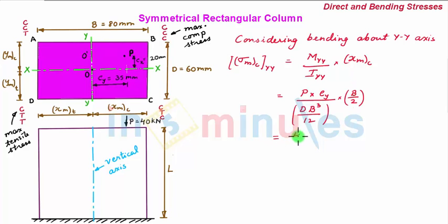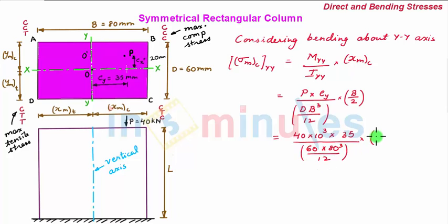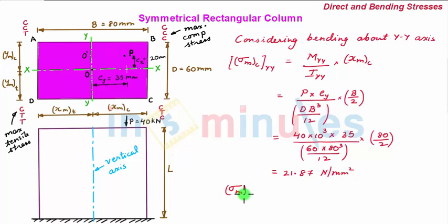Substituting the values: 14 × 10³ × 35 divided by (80³ / 12) multiplied by (80 / 2). On solving, we get the value as 21.87 N/mm². Due to symmetry, sigma max of tension about the YY axis will also be the same value: 21.87 N/mm².